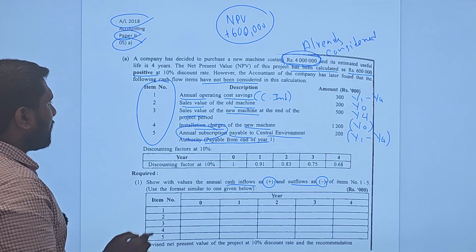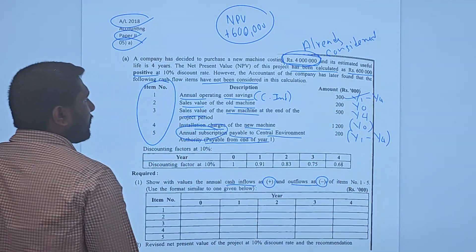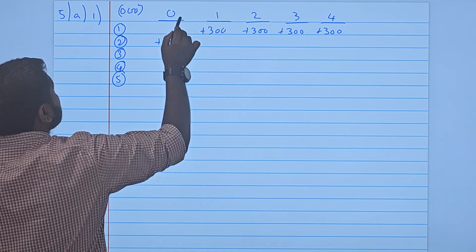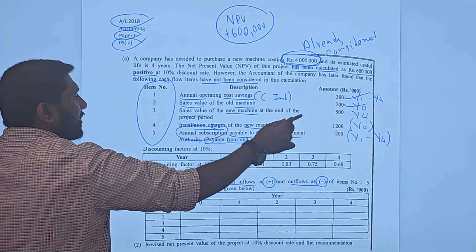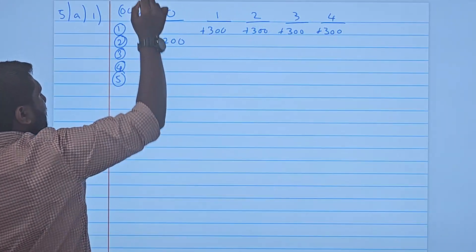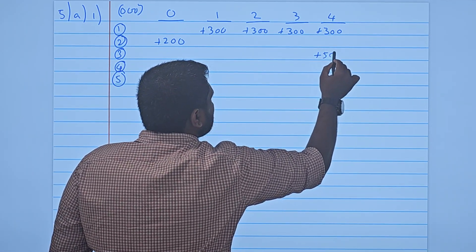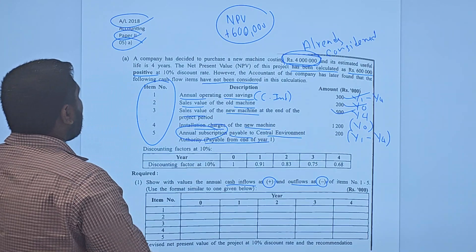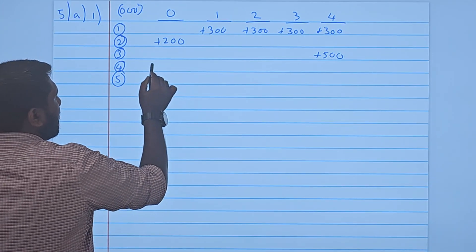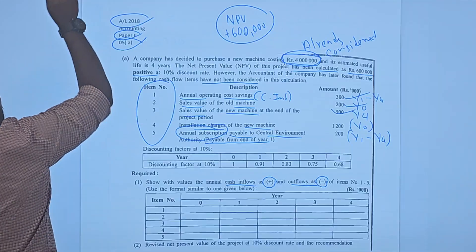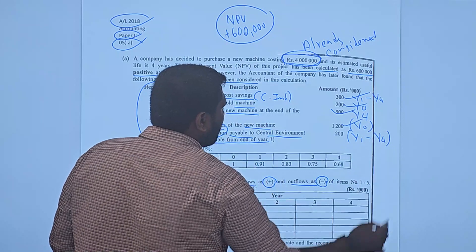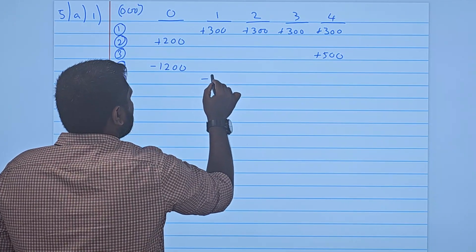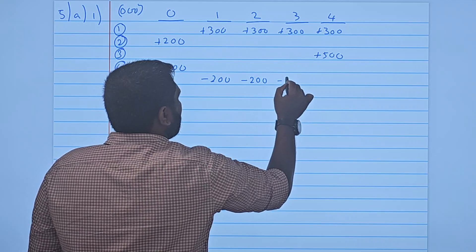Item 1 — annual operating cost saving: Year 1 to Year 4, each year +300. Item 2 — selling the old asset: Year 0 inflow, +200. Item 3 — selling the new asset: Year 4 inflow, +500. Item 4 — installation charges of the new asset: Year 0 outflow, −1,200. Item 5 — annual subscription: Year 1 to Year 4, each year −200.